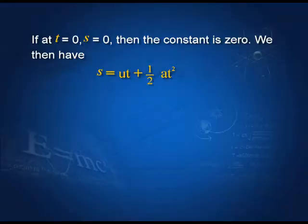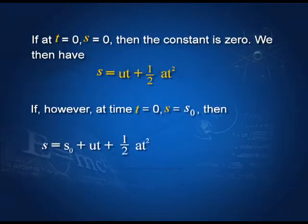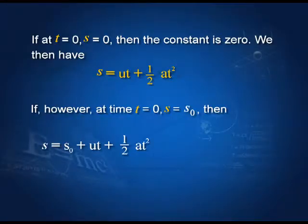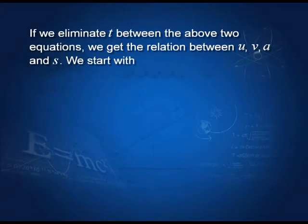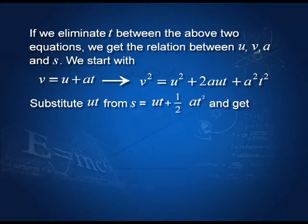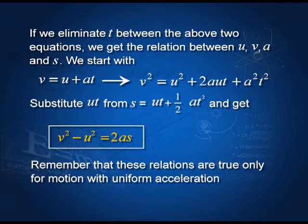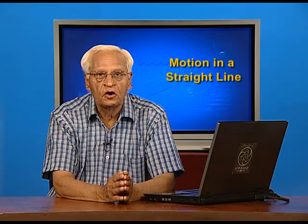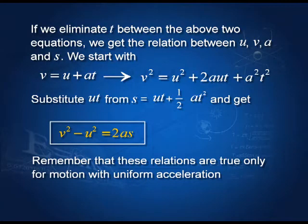On the other hand, if at time t = 0, s equals some value s₀, then the equation becomes s = s₀ + ut + ½at², because s₀ is in this case the constant of integration. If we eliminate t between v = u + at and s = ut + ½at², we get the third equation: v² − u² = 2as. I want to remind you that these relations are true only for uniform acceleration — this is the point which we generally forget.